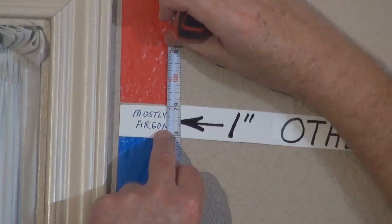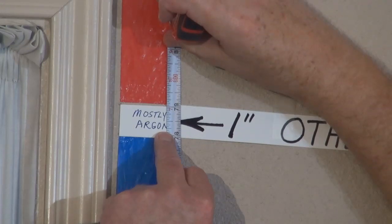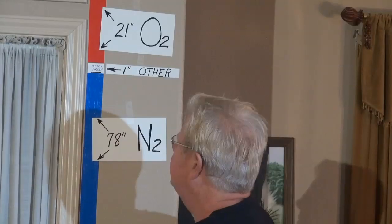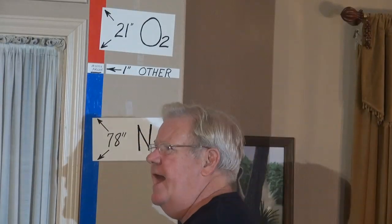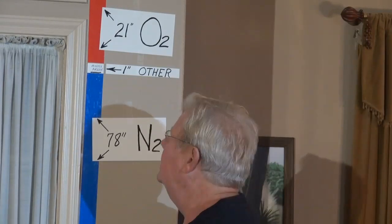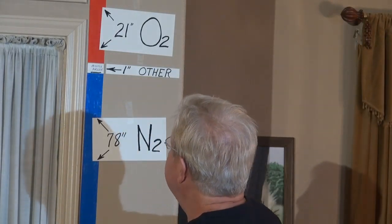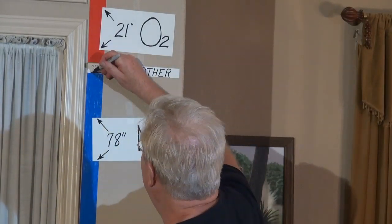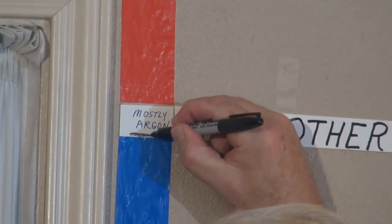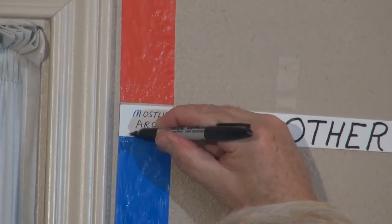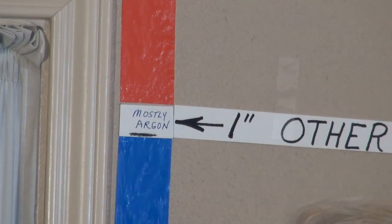Four one-hundredths would be a twenty-fifth, so it's about half a hash mark on this. In fact, it would be the equivalent of about the size of the end of a sharpie. That's four one-hundredths of an inch of carbon dioxide.